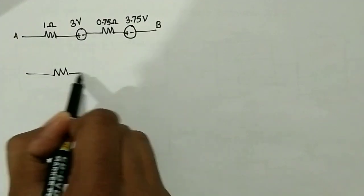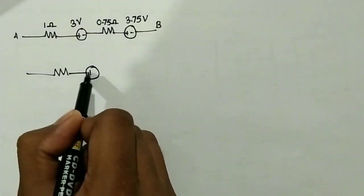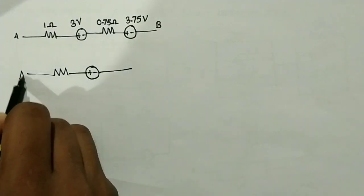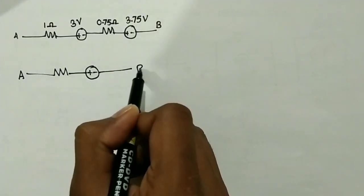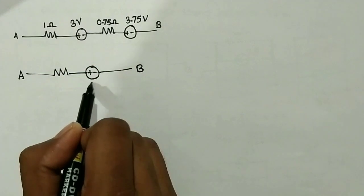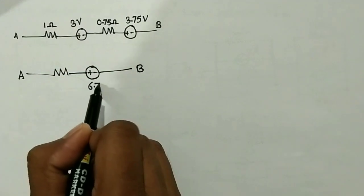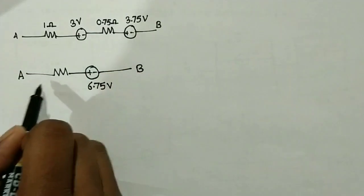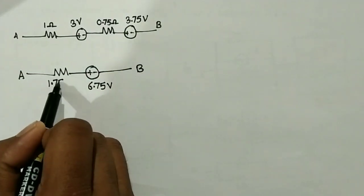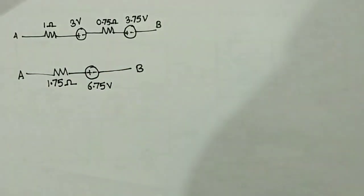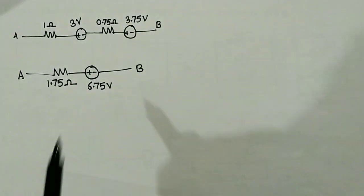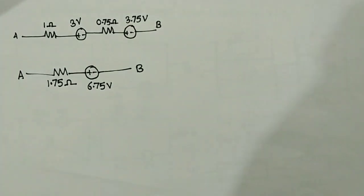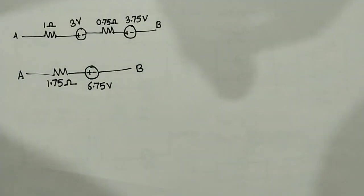Now, these two voltage sources are in series and can be added, and this 1 ohm and 0.75 ohm resistance are also in series and can be added. After that, we will get the final voltage source of 6.75 volts with a series resistance of 1.75 ohm. Thus, we have replaced our whole circuit with one single source and a series resistance. Thank you.